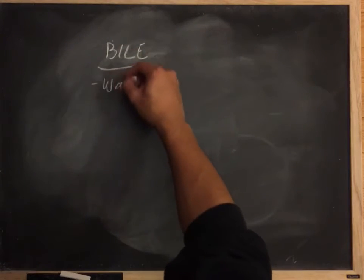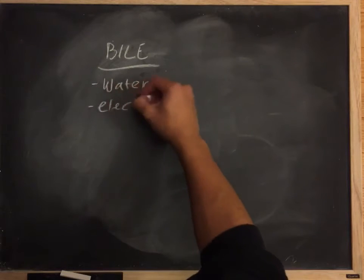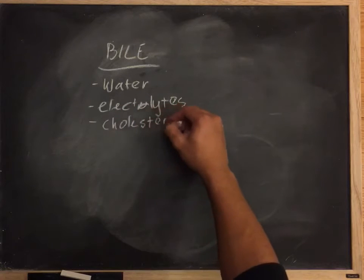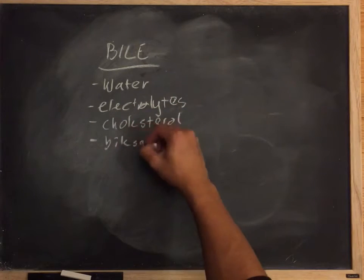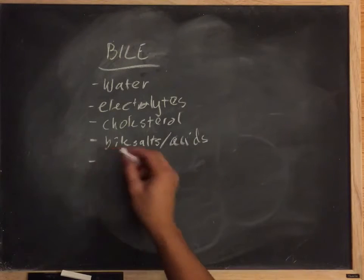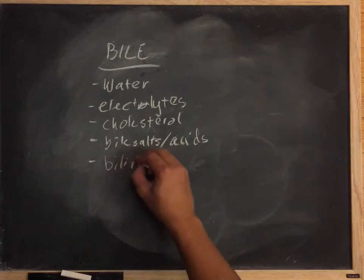But what exactly is bile and what is it made out of? Well, first of all it's made out of water and electrolytes. However, as I mentioned before, there are organic molecules such as cholesterol, bile salts and acids, bilirubin, and phospholipids.